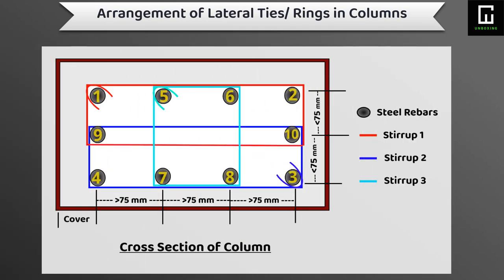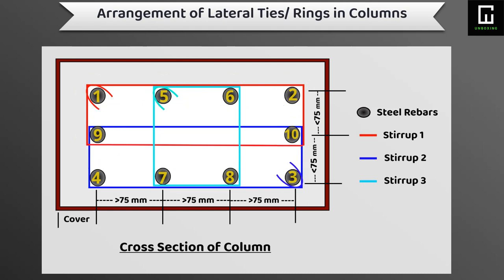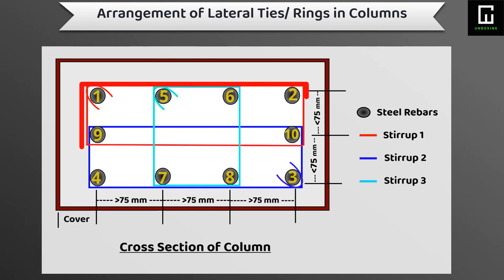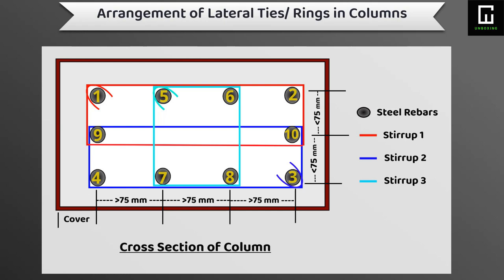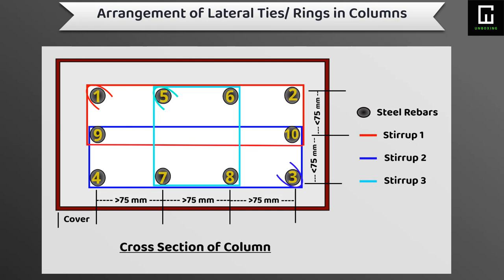In the seventh type of column, the column size is more than 225 mm in length but less than 150 mm in width, with ten numbers of longitudinal bars. While providing stirrups, we have to use two rectangular-shaped regular size stirrups. Bar numbers one, five, six, two, ten, and nine are connected with one rectangular stirrup, and bar numbers nine, ten, three, eight, seven, and four are connected with another rectangular stirrup. The innermost bars — five, six, seven, and eight — are connected with a regular size stirrup.